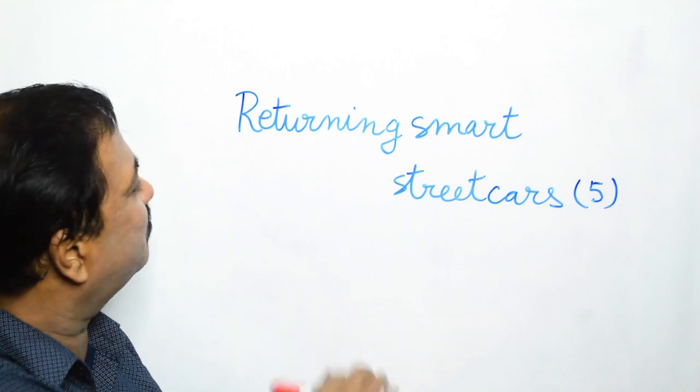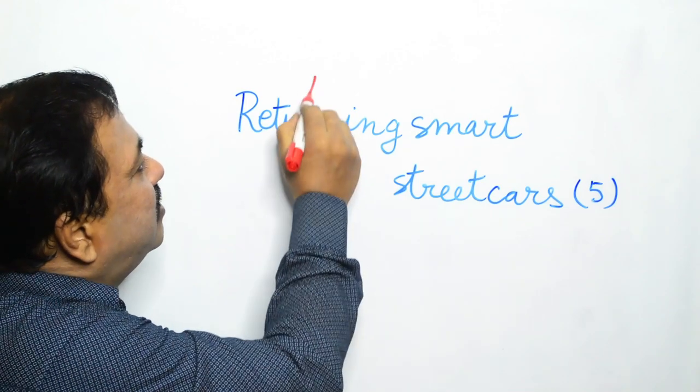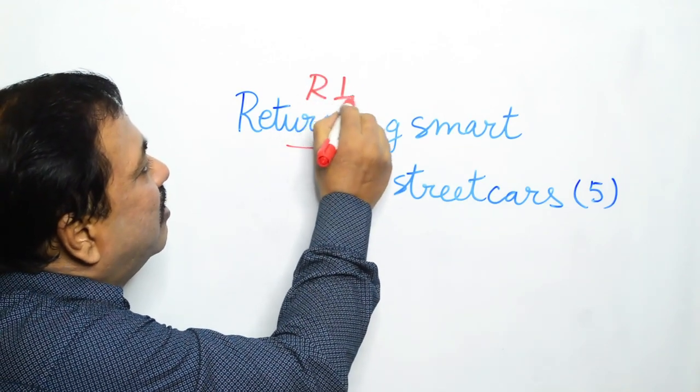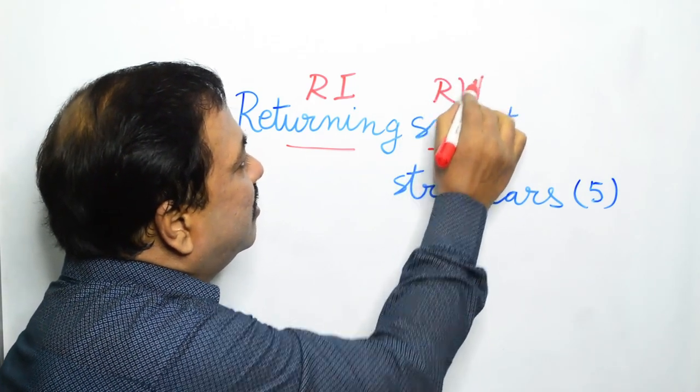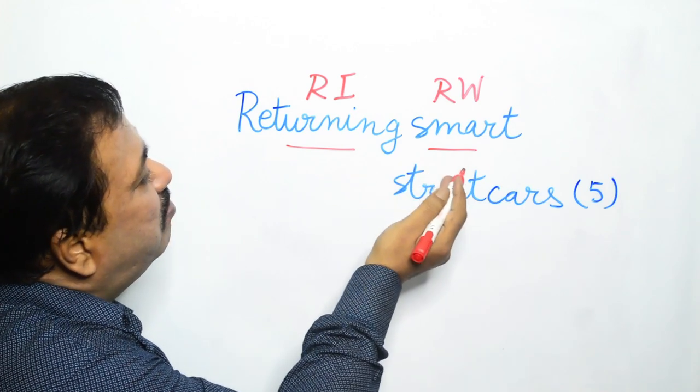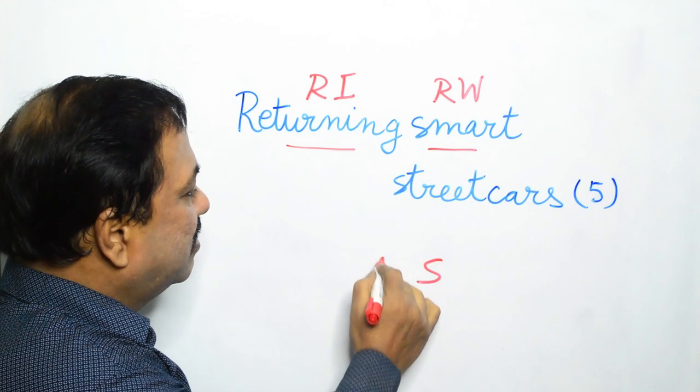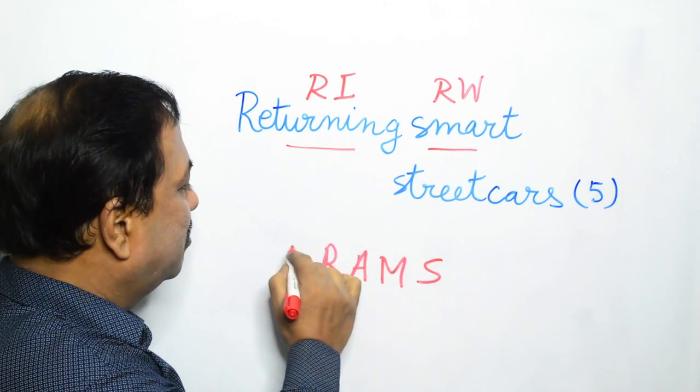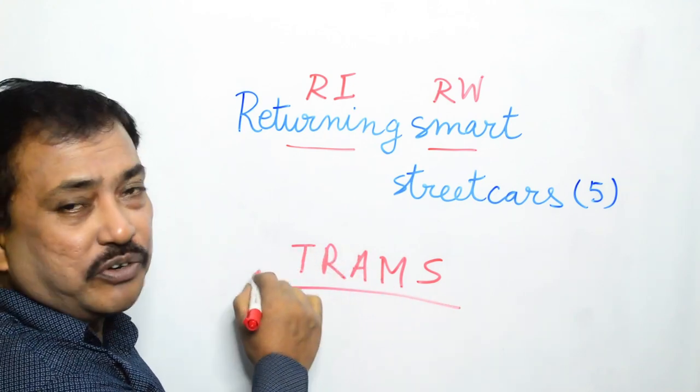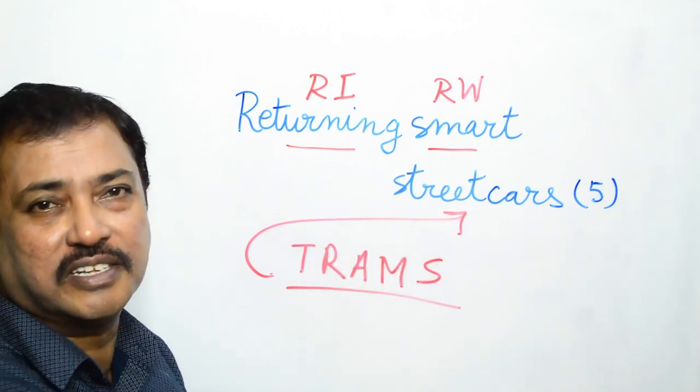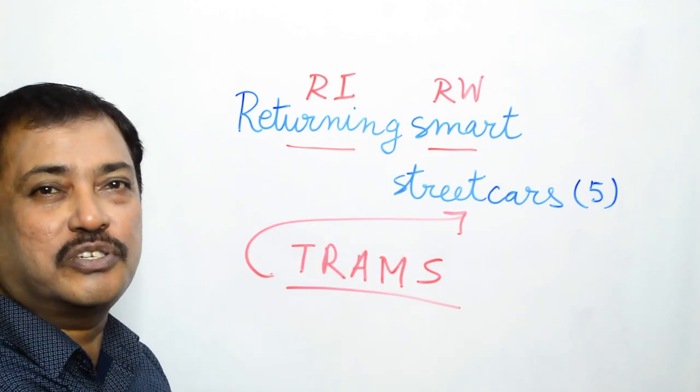The next one: Returning smart streetcars. Returning is the reversal indicator, smart is the reversible word. So smart is returning, coming back, and we get trams. And what are trams? Trams are streetcars. And in the United States of America and in Canada, trams are called streetcars.